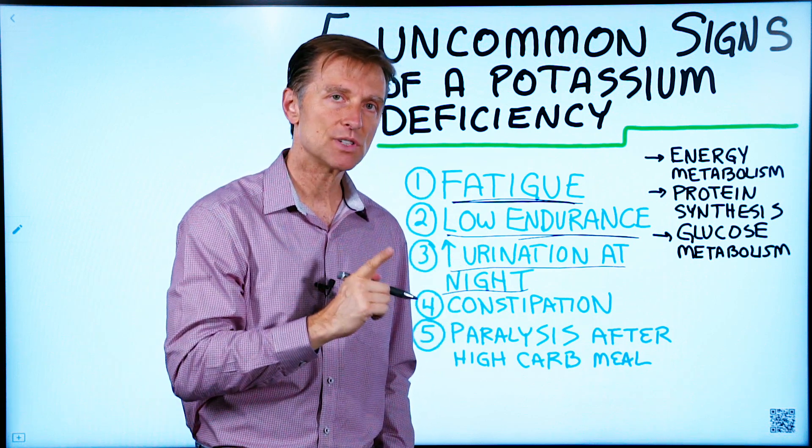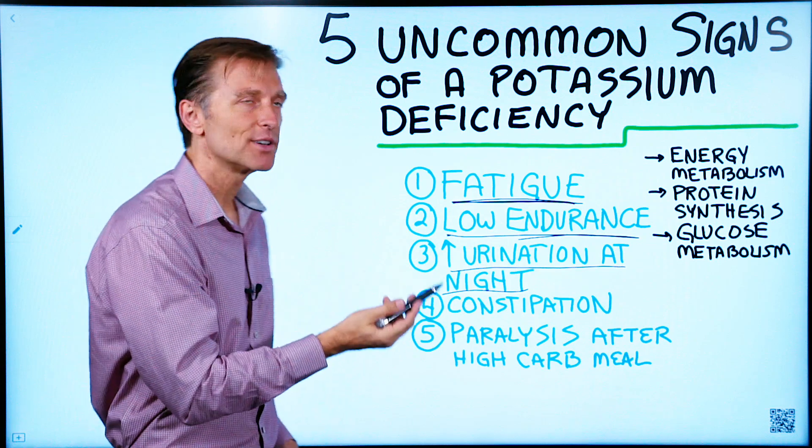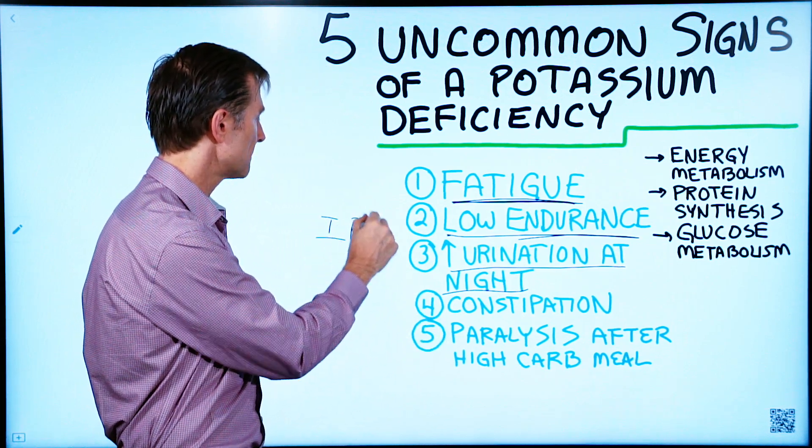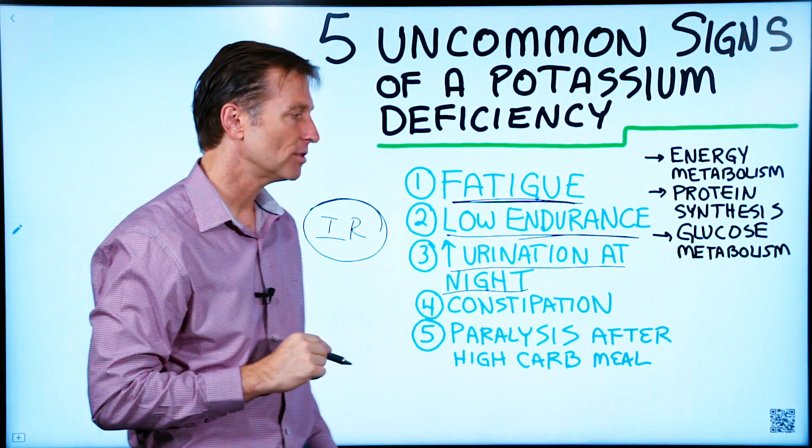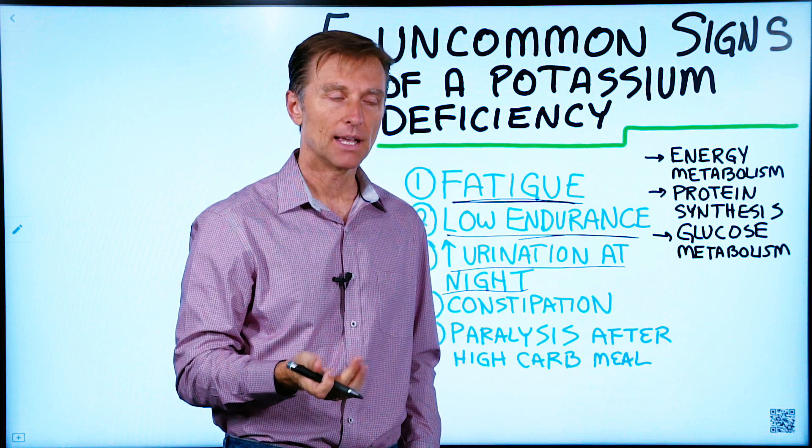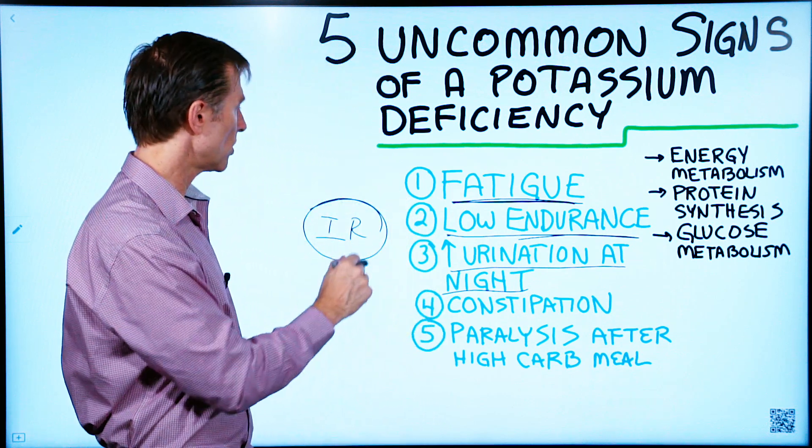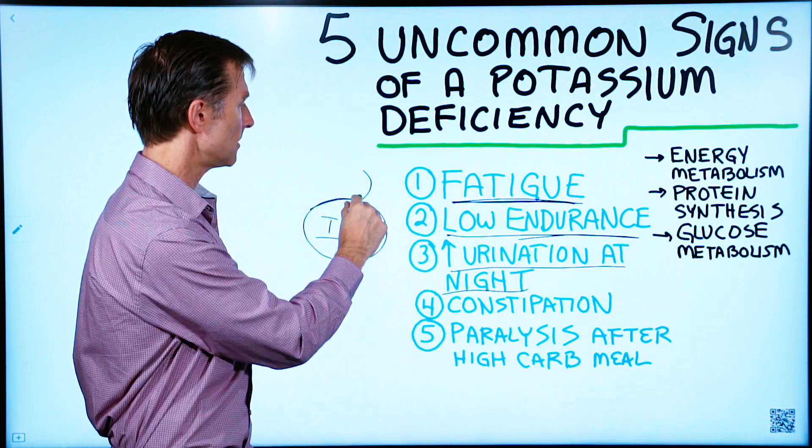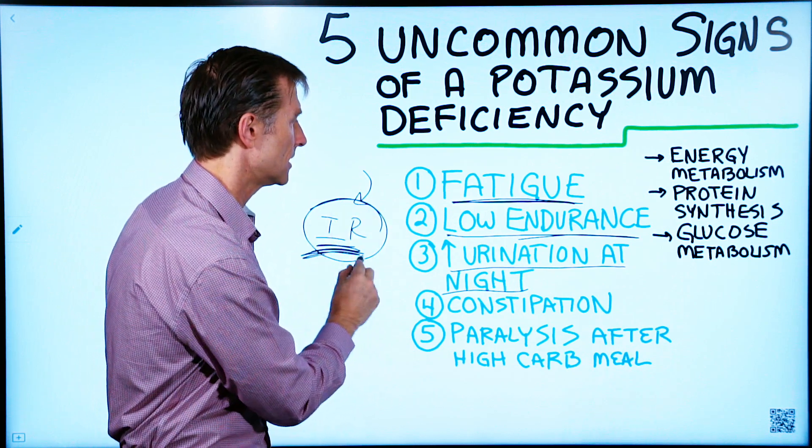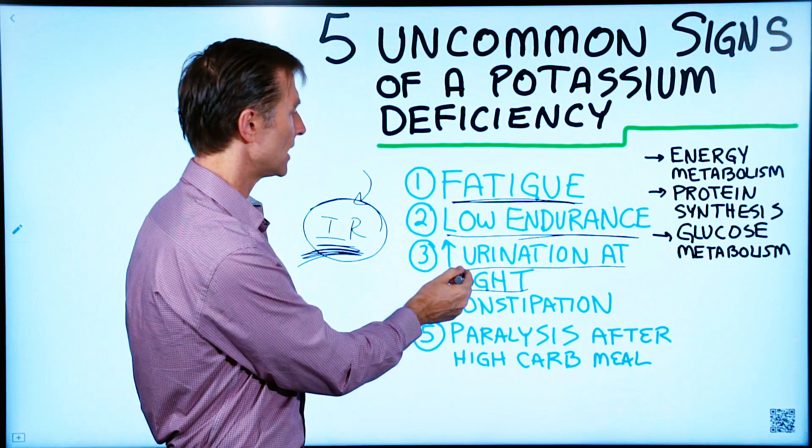But that potassium deficiency could be coming because you're diabetic, because insulin resistance is involved. And when you have insulin resistance, you can't really absorb potassium and magnesium that well. And just as a side note, it's very important to take extra potassium and magnesium if you have diabetes or you have insulin resistance. That will actually help the urination at night.